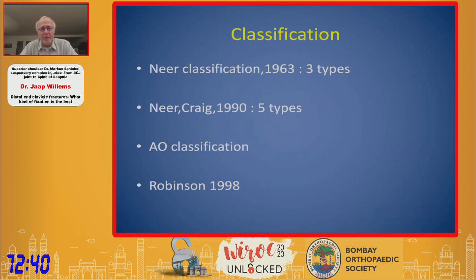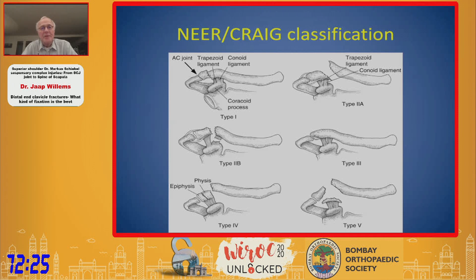We are familiar with the Neer classification — he developed a classification of three types. Ed Craig adapted it and described five types. There is also an AO classification and Robinson made a classification as well. The most commonly used is the Neer-Craig classification.